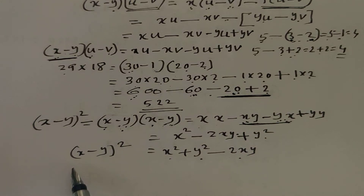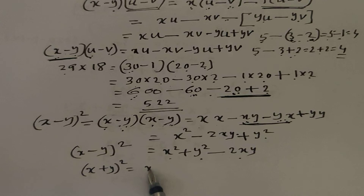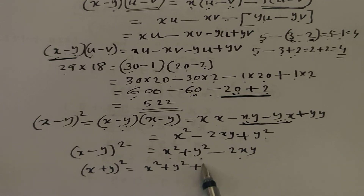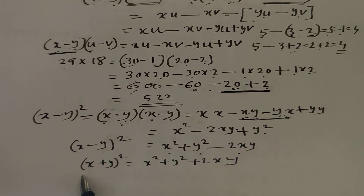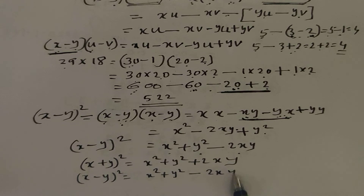This is the term of x plus y whole square, that is x squared plus y squared plus 2xy. Now, the term of x minus y whole square is equal to x squared plus y squared, but here minus 2xy.